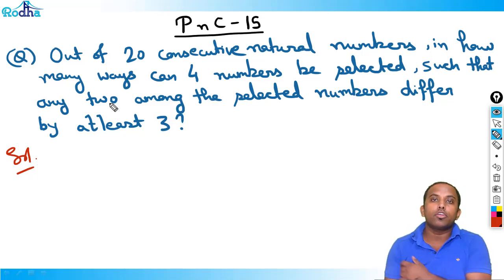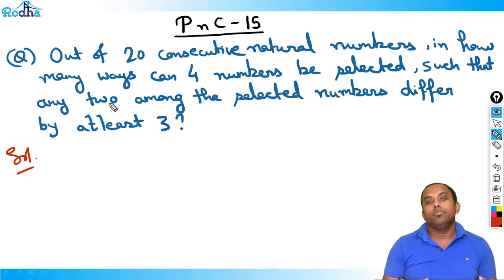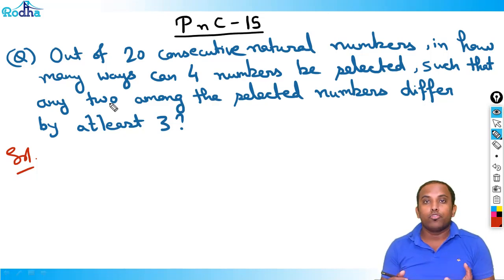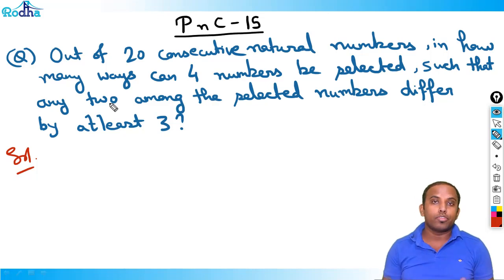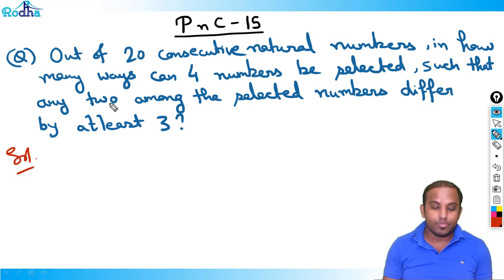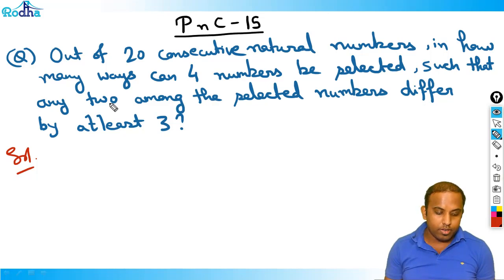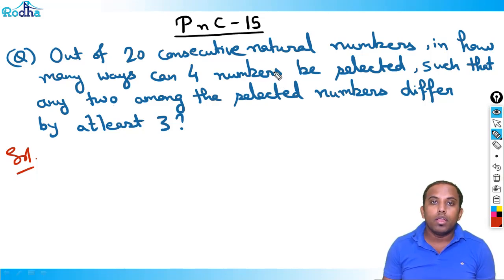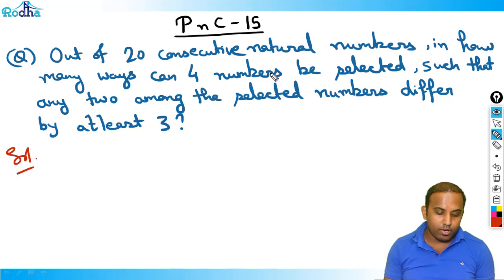I'm solving it now, assuming that you've paused for five minutes and solved it. So now in this question, what you have to see is that we have 20 consecutive natural numbers and we have to select four numbers out of this.